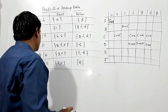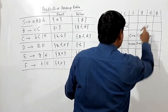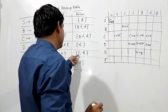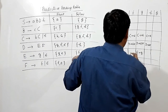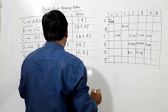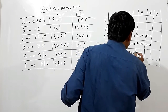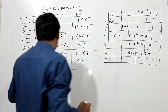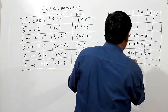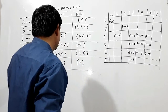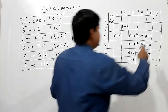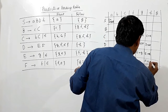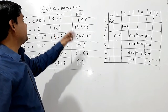For E: FIRST(E→G) = {G}, so we write E→G in cell [E, G]. Since E→Epsilon exists, we look at FOLLOW(E) = {F, H} and write E→Epsilon in cells [E, F] and [E, H]. For F: FIRST(F→F) = {F}, so F→F goes in cell [F, F]. Since F→Epsilon exists and FOLLOW(F) = {H}, we write F→Epsilon in cell [F, H]. This completes the predictive parsing table.